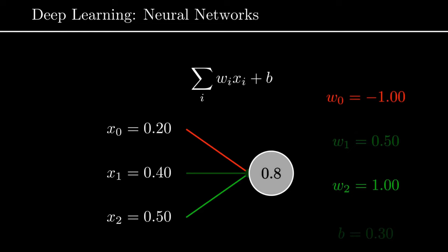What is a neuron in a neural network? A neuron is essentially a generalized linear operation. Before we had the gradient mx + c, and now for many inputs to a neuron it's simply a weighted sum of all the inputs plus some bias — a linear combination. The output of the neuron is the linear combination of all the inputs with some weights plus a bias. For example, if we have three inputs x₀, x₁, and x₂, we multiply by three weights — weight zero, weight one, weight two — and the bias. Taking the linear combination x₀ω₀ + x₁ω₁ + x₂ω₂ + b gives us a value of 0.8.